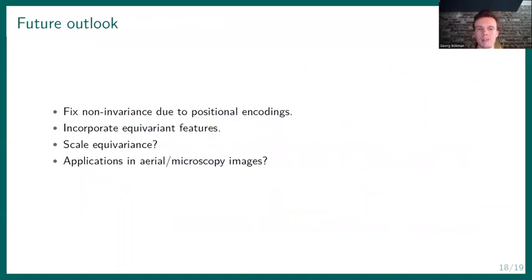So potential future work are fixing this non-invariance due to the positional encodings, by, for instance, using some sort of relative positional encodings that are rotation invariant. And then we could try to use some equivariant features in the output layers of the CNN. Because, for instance, in SIFT, you get not only features, but you also get orientations of those features. And those orientations are examples of equivariant features. We could try to incorporate the scale equivariance or invariance somehow. Because that was seen, for instance, in the image matching challenge this year, that state-of-the-art methods are not invariant to scale changes. And we could try to find some nice applications, for instance, in aerial or microscopy images. Because what I've shown so far are just artificial rotations of images.